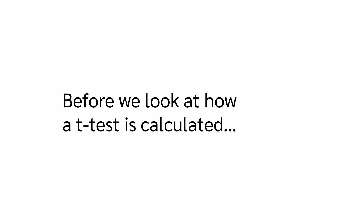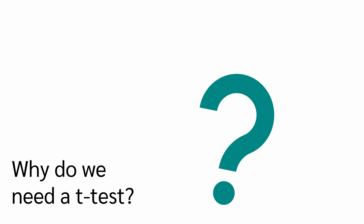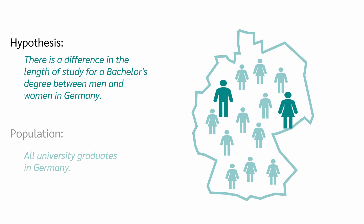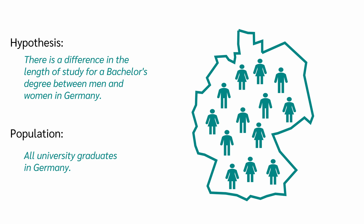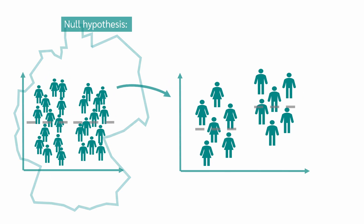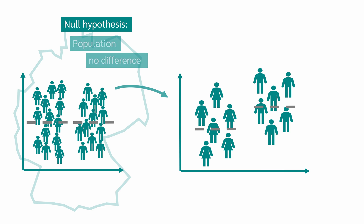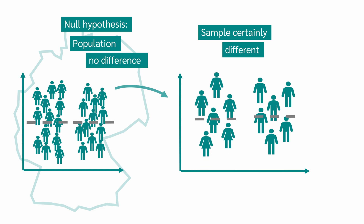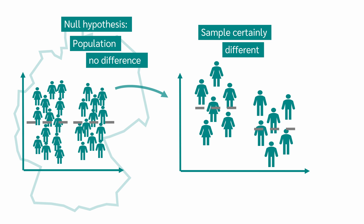Before we look at how a t-test is calculated, let's look at an example of why we actually need a t-test. Let's say there is a difference in the length of study between men and women in Germany. Our population is made up of all graduates who have studied in Germany. However, as we cannot survey all graduates, we draw a sample that is as representative as possible. We use the t-test to test the null hypothesis that there is no difference in the population. Even if there is no difference in the population, we will still likely see a difference in the sample — it would be very unlikely that the sample difference would be exactly zero. In simple terms, we want to know at what difference, measured in the sample, we can say that the duration of study of men and women is significantly different. And this is exactly what the t-test answers.